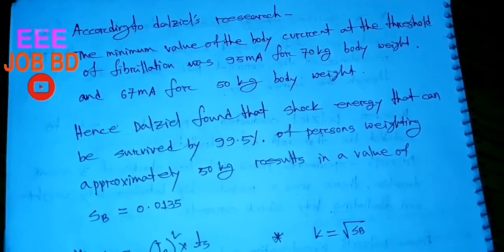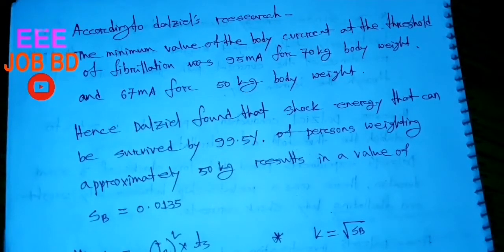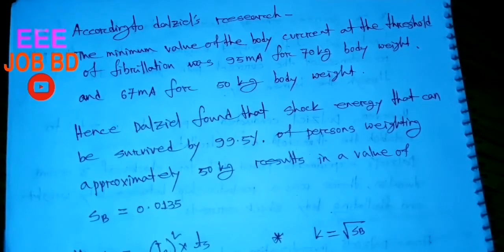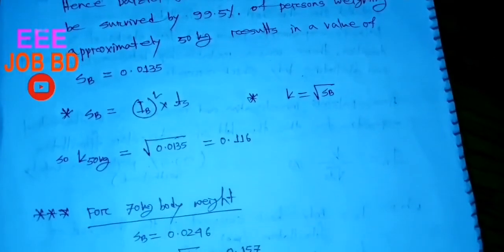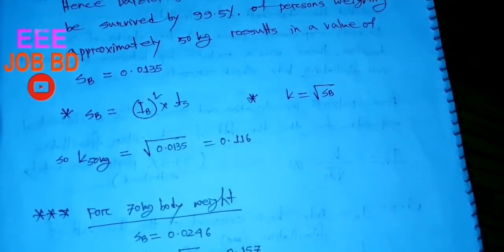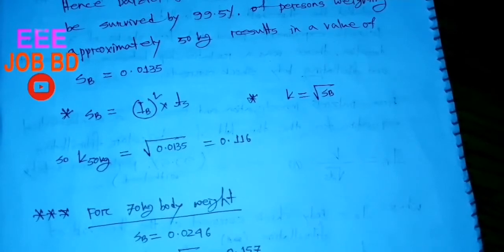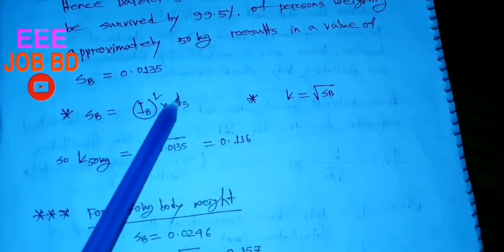When you have a 50 kg body weight, ventricular fibrillation can occur in the heart. When you have 70 kg, the threshold limit is 95 mA. The threshold limit applies to 99.5% of persons weighing approximately 50 kg. Dalziel used the minimum value of Sb, which is 0.135. Here, Sb equals IB squared into Ts.